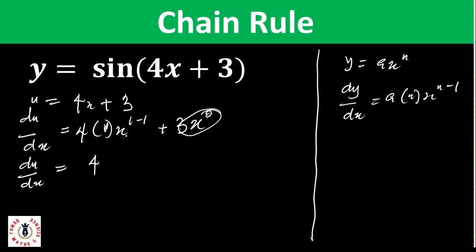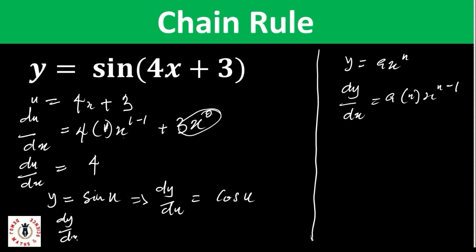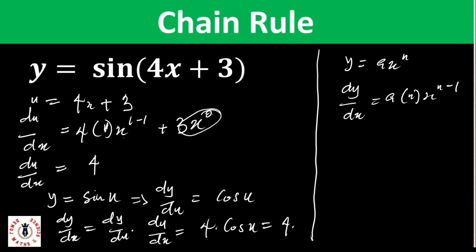Now that we have du/dx = 4 and u = 4x + 3, clearly y = sin(u), which means dy/du = cos(u). Remember for chain rule: dy/dx = dy/du times du/dx = cos(u) × 4 = 4cos(u). Substituting back, since u = 4x + 3, dy/dx = 4cos(4x + 3).